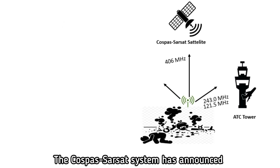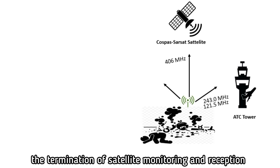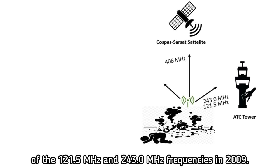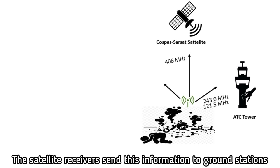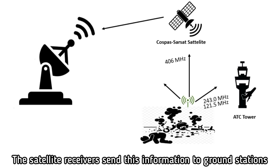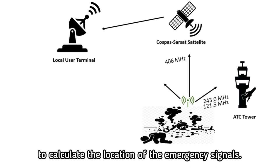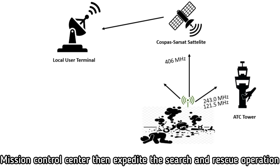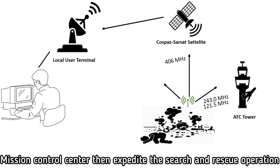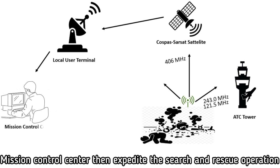The COSPAS SAR-SAT system announced the termination of satellite monitoring and reception of 121.5 MHz and 243 MHz frequencies in 2009. The satellite receiver sends this information to a ground station to calculate the location of the emergency signals. The mission control center then expedites the search and rescue operation of the aircraft.